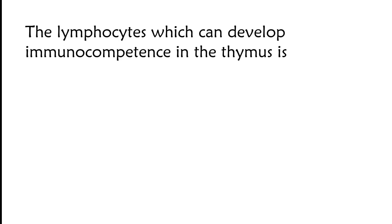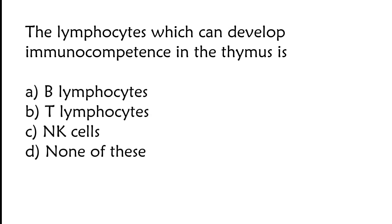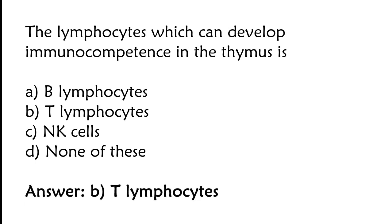The lymphocytes which can develop immunocompetence in the thymus — options: B-lymphocytes, T-lymphocytes, natural killer cells, none of these. The correct answer is option B. T-lymphocytes.